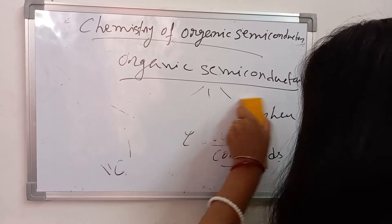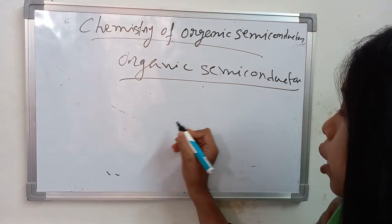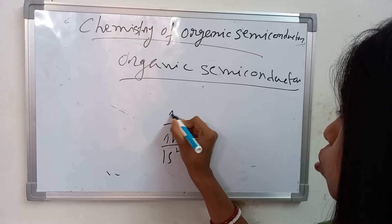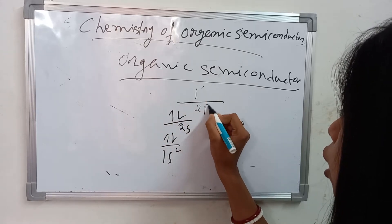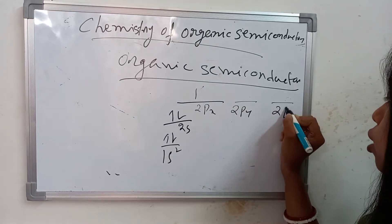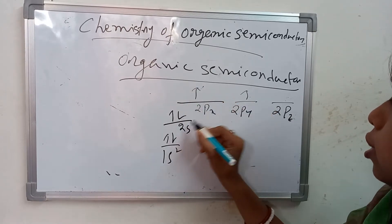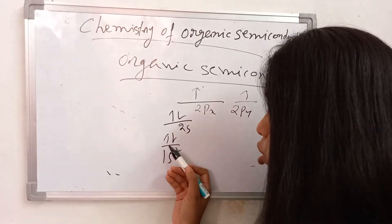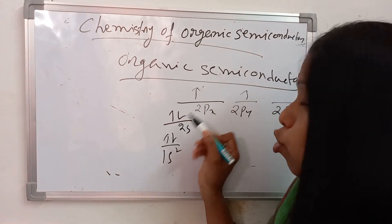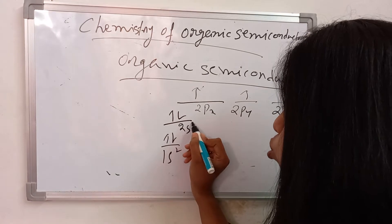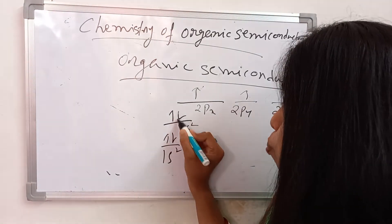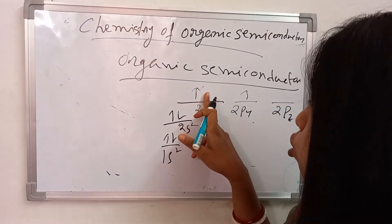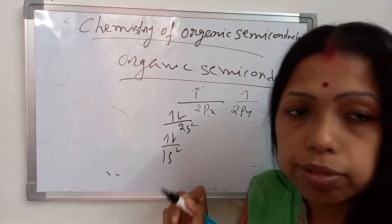If you think about the configuration of the carbon compound: 1s², 2s², 2px, 2py, and 2pz. The 1s² is the inner orbital. The outer orbitals are 2s² and 2px, 2py, 2pz. The 2s² is fully occupied, 2px and 2py are half-filled with one electron each, and 2pz is unoccupied.